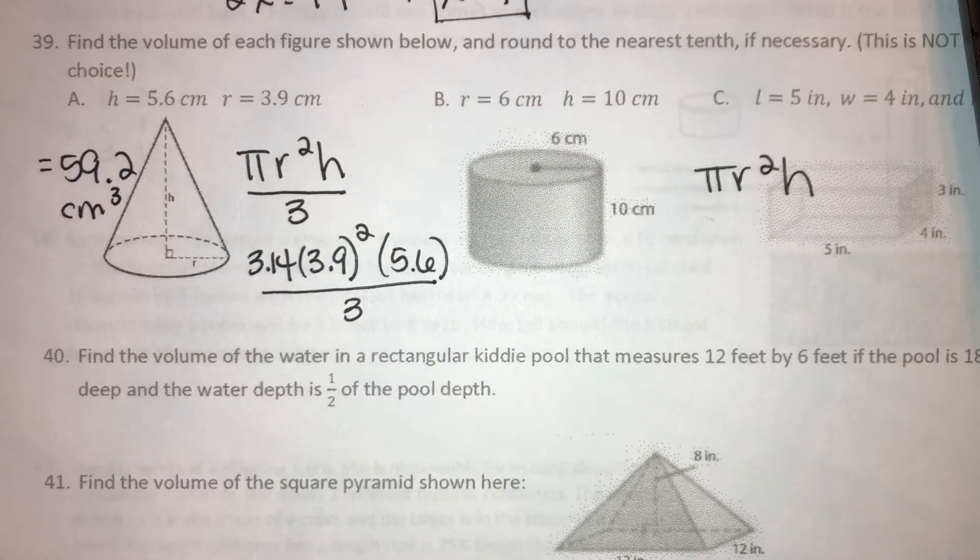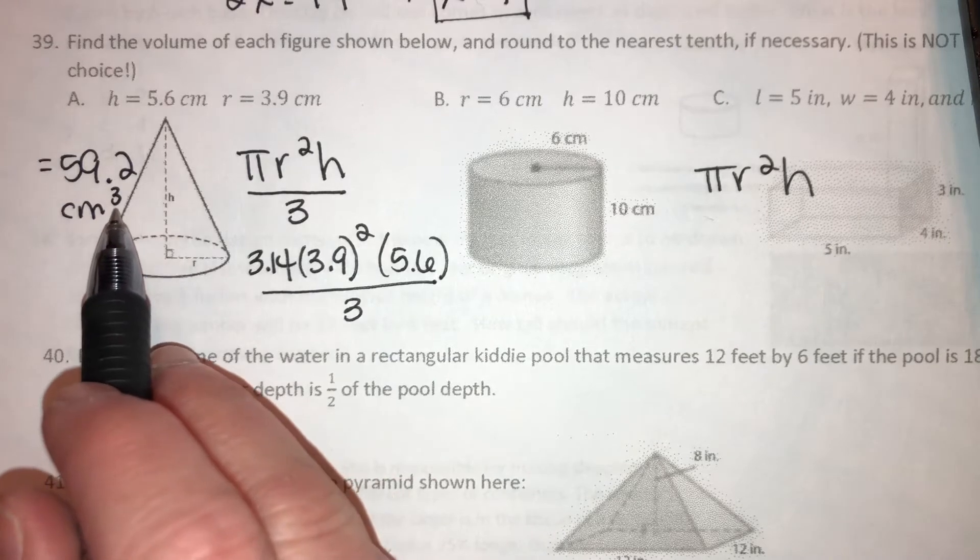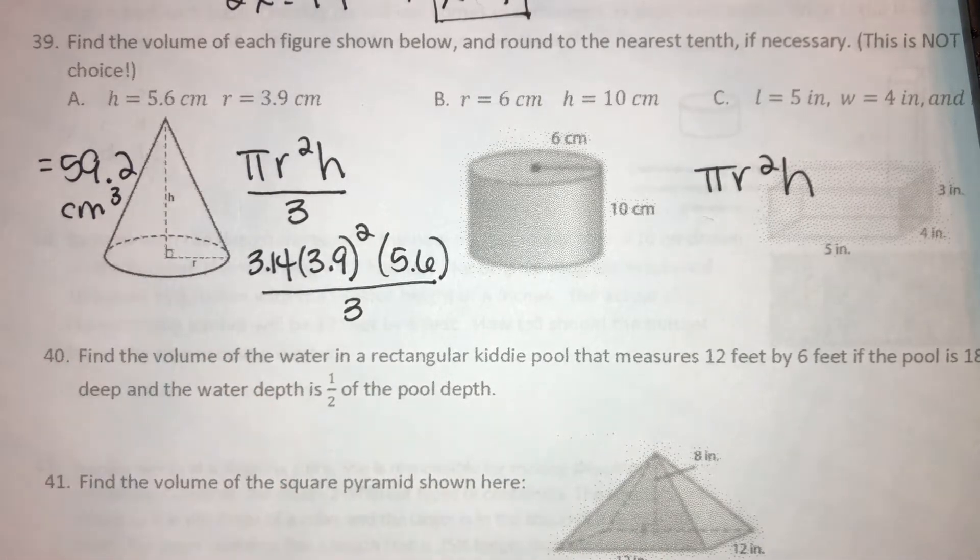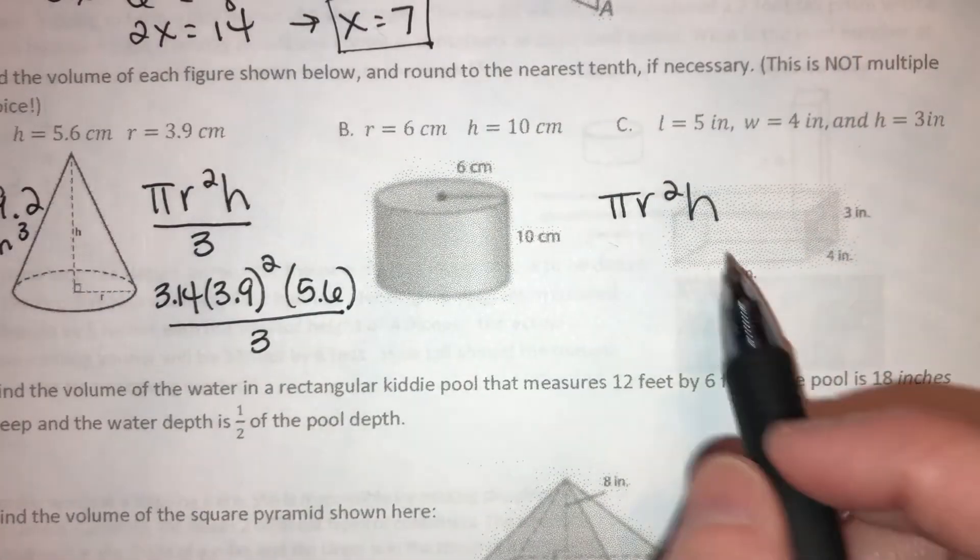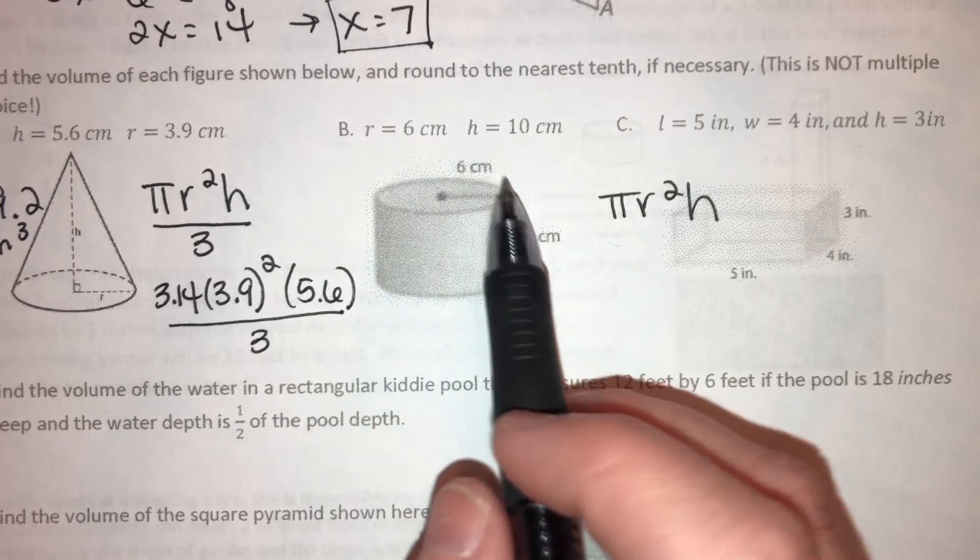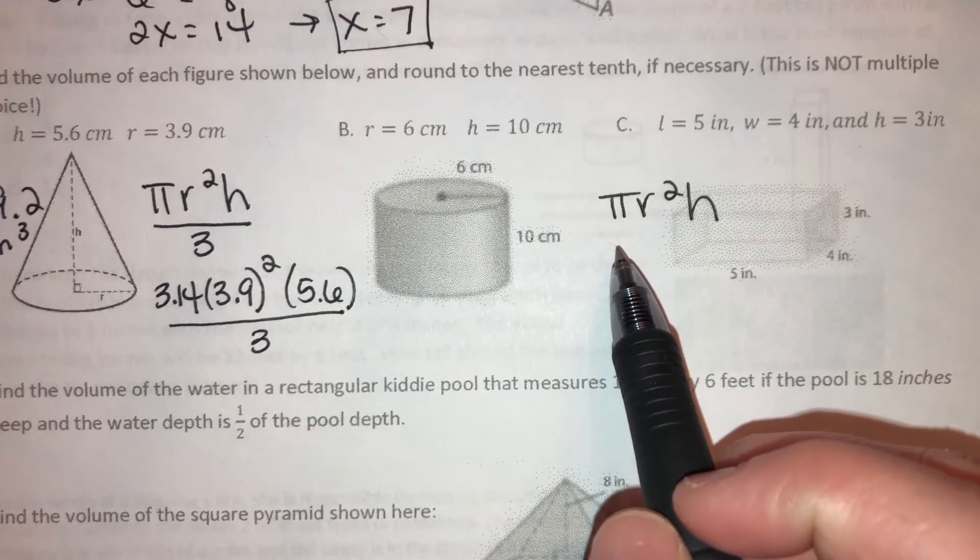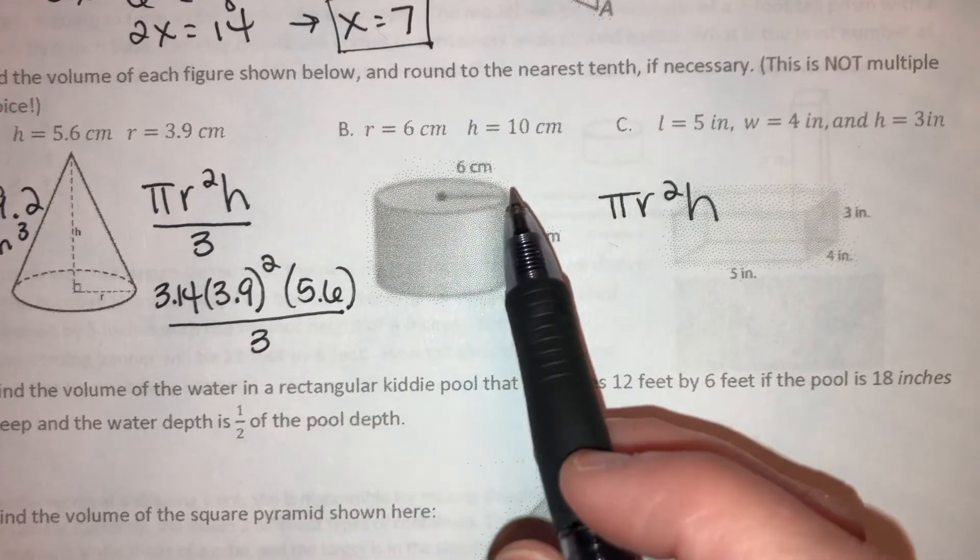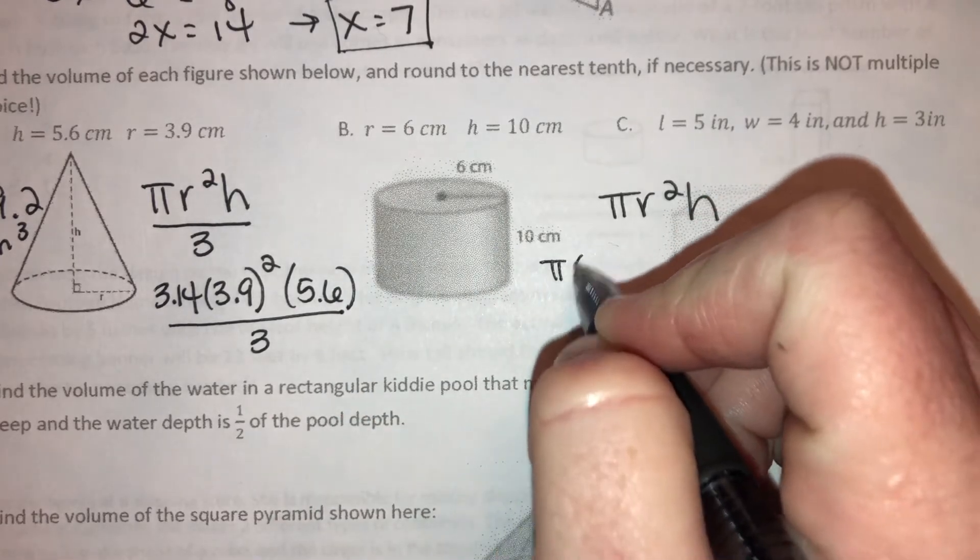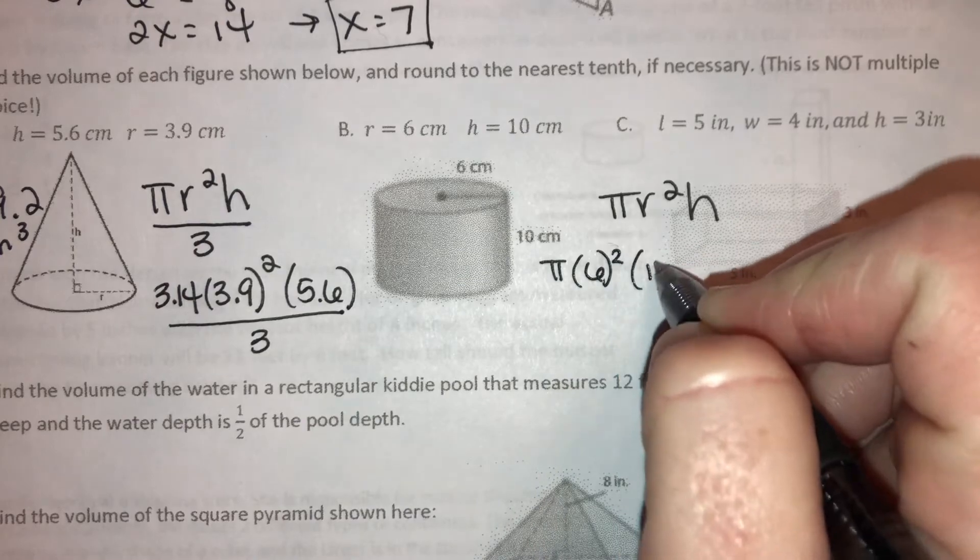Volume is for three-dimensional shapes. Since it's three-dimensional, we put a little three here. If it was two-dimensional, we'd put a little two here. Okay, then same thing for the cylinder. We're gonna set it up. I wouldn't even realize there's another shape here, sorry. We're gonna set it up and then round to the nearest tenth.